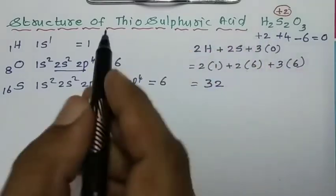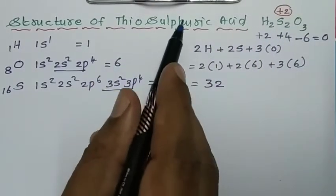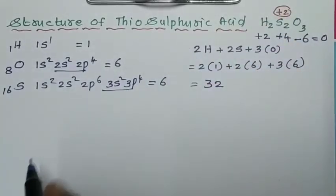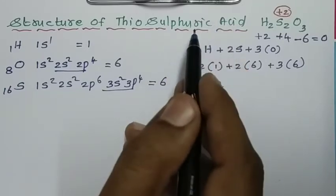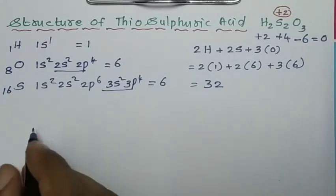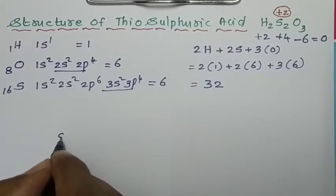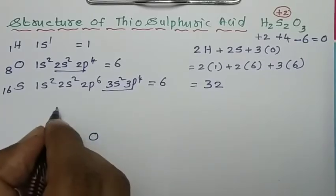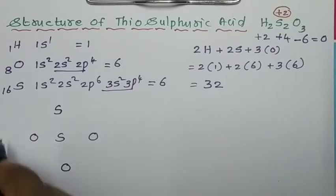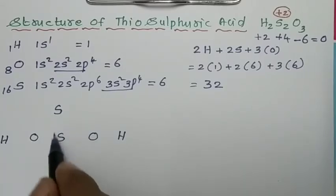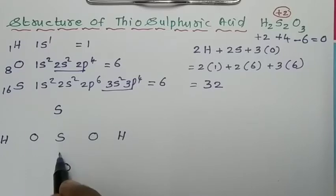So we have two sulfur atoms. Thio indicates sulfur, and sulfur indicates sulfur, so in this compound there is a double bond between two sulfur atoms. We know the sulfuric acid structure — in sulfuric acid, one oxygen atom is replaced by one sulfur. Sulfur is at the center; there is one oxygen, second oxygen, third oxygen, and the fourth place is occupied by one sulfur. Hydrogen is always a terminal atom. Remember, in these two places there is a double bond formed between sulfur and oxygen.